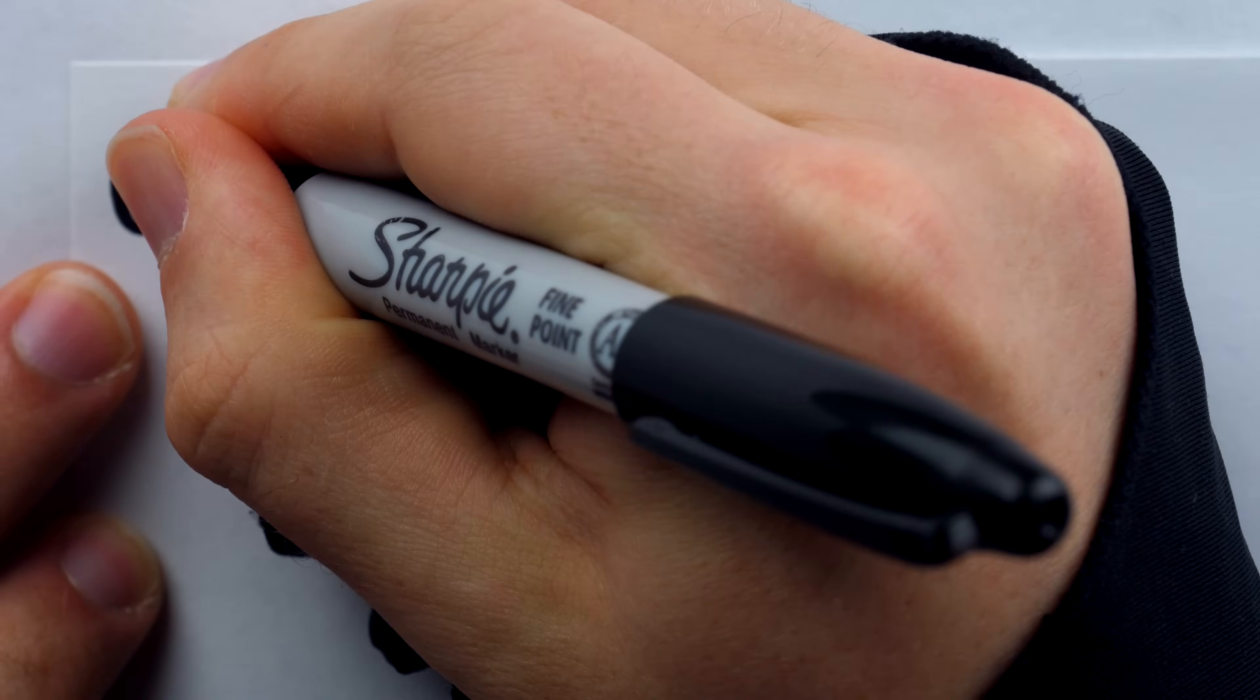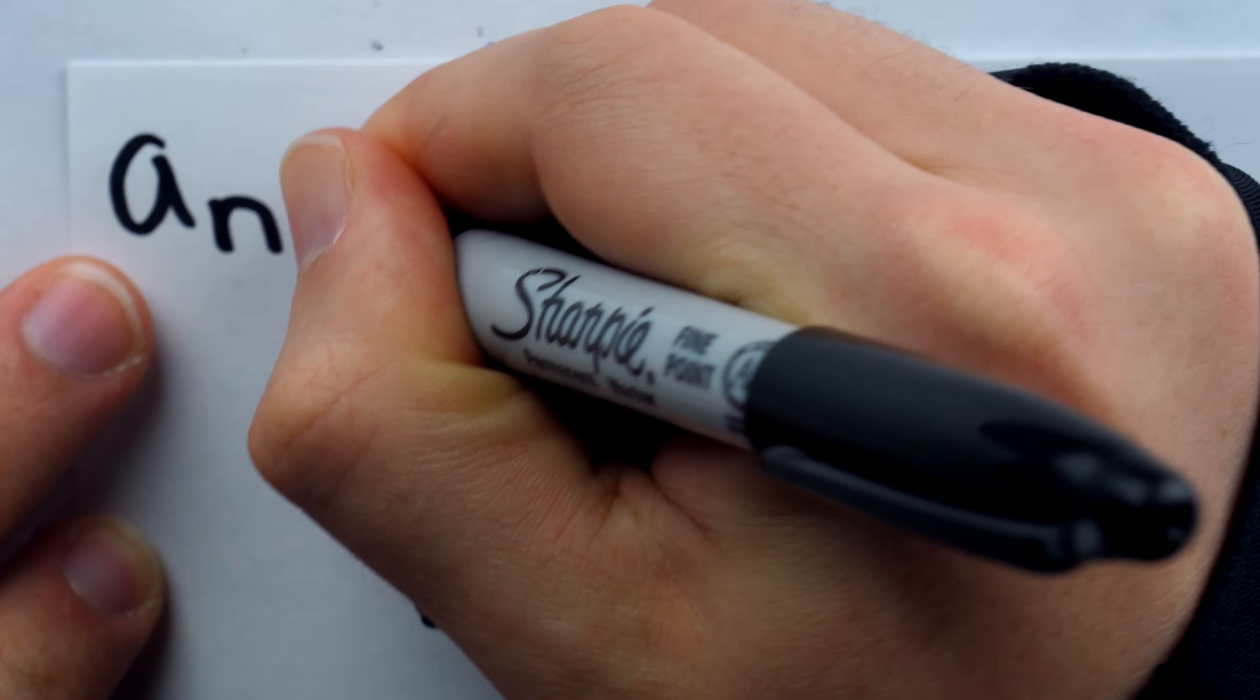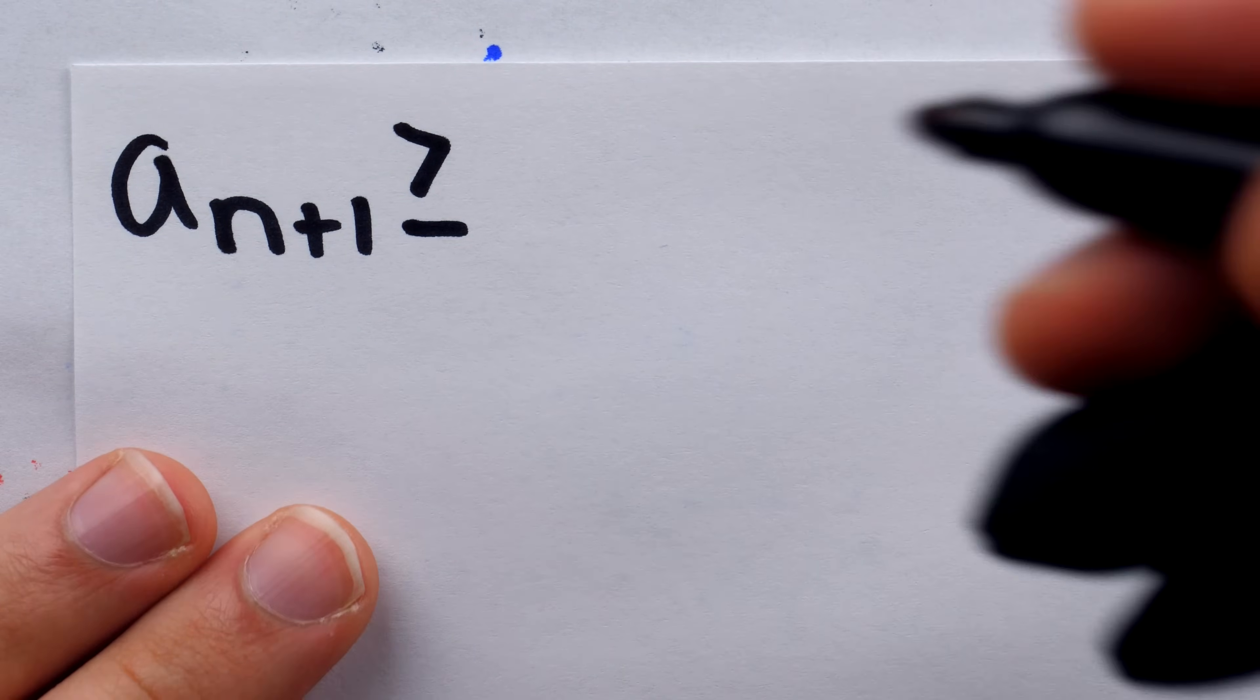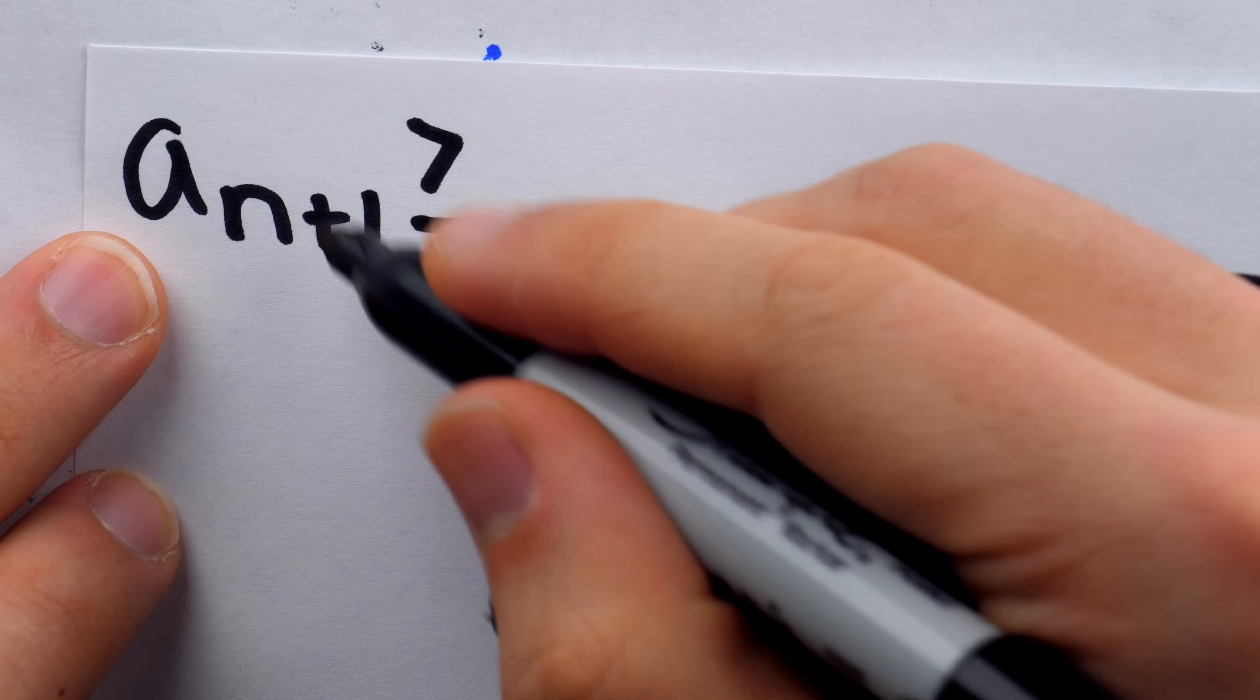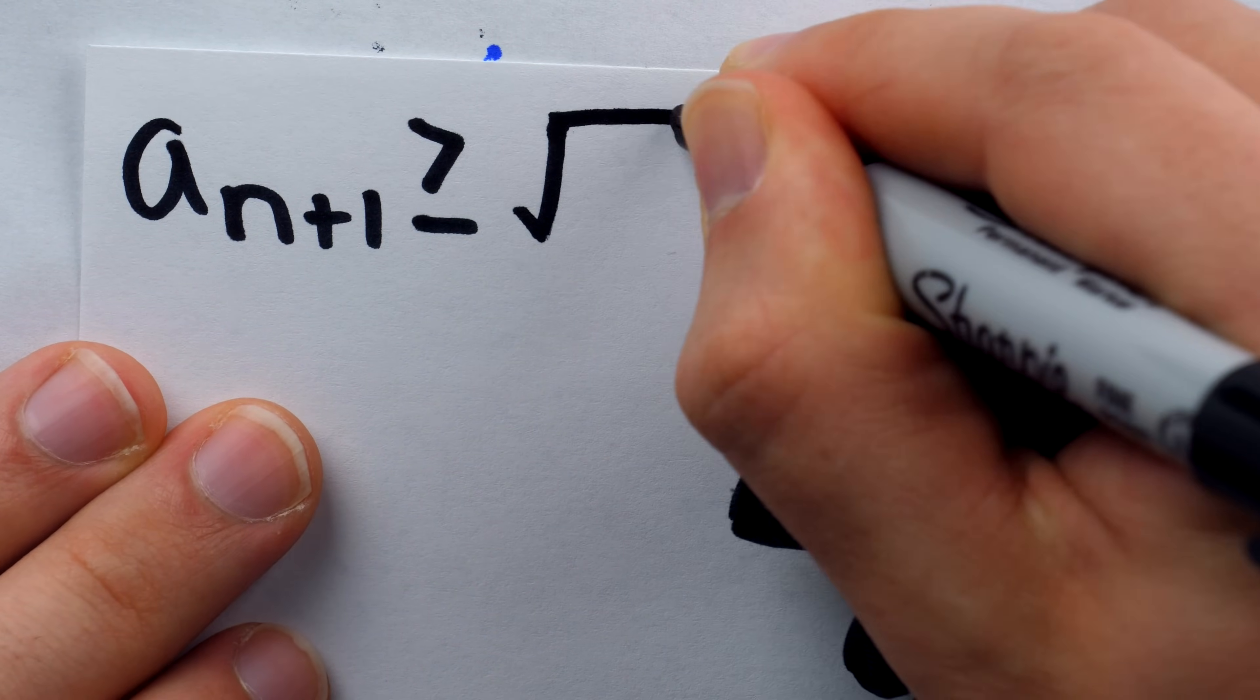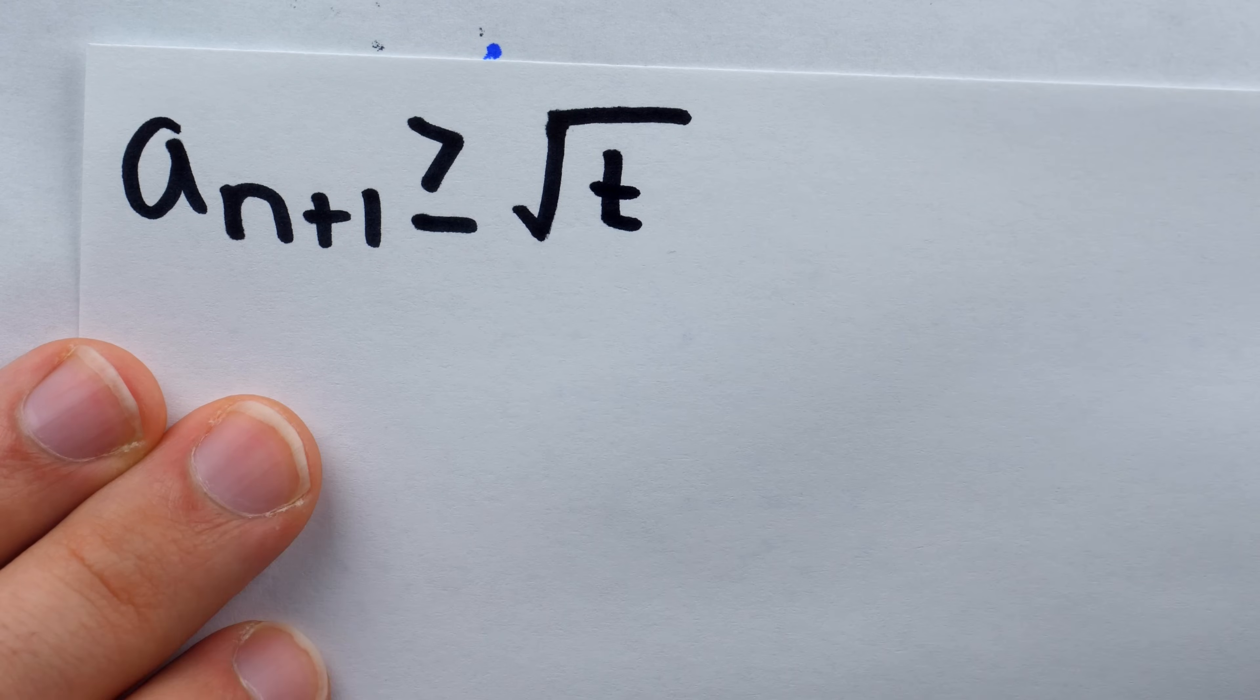All right. For starters, to prove that our sequence is bounded below, we need to prove that a n plus 1 is greater than or equal to something. And as I said before, the sequence actually gives us overestimates for the square root. So, we can prove that it's greater than or equal to the square root of t.